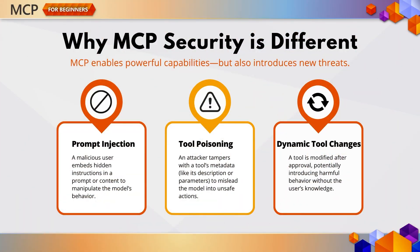The Model Context Protocol unlocks powerful capabilities by allowing AI systems to interact with tools, APIs, and data. But with that power comes new risk, like prompt injection, tool poisoning, and dynamic tool modification. These threats can lead to things like data exfiltration, privacy breaches, or even an AI system executing unintended actions, all because of something hidden in a prompt. The good news? You can absolutely defend against them, but it starts with understanding them. So let's walk through the most common risks one by one.